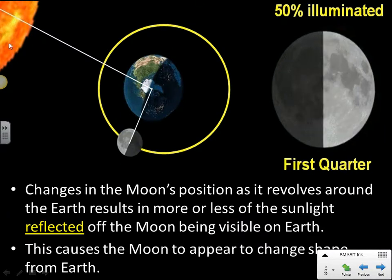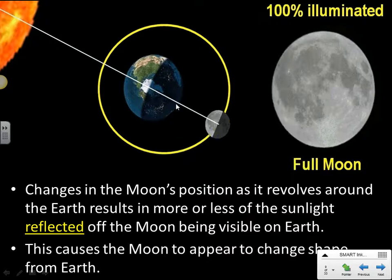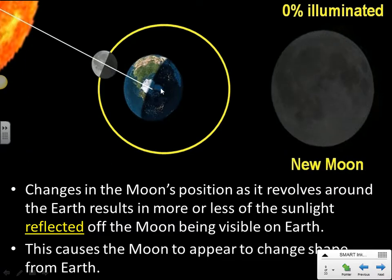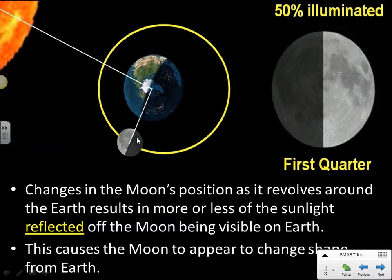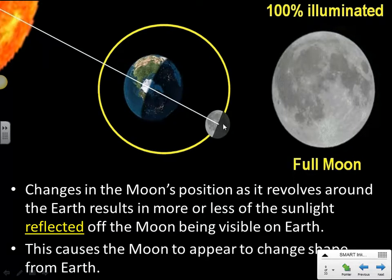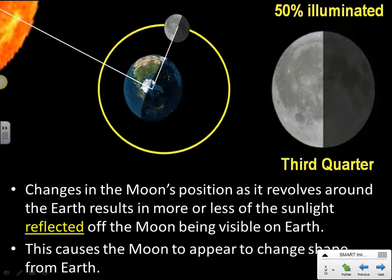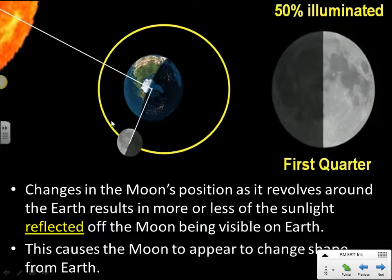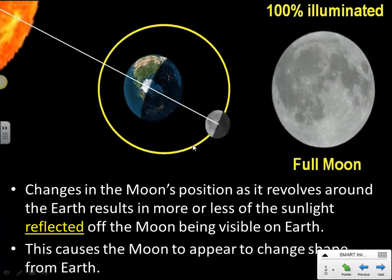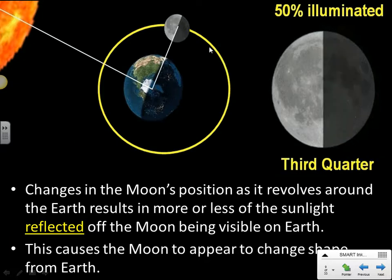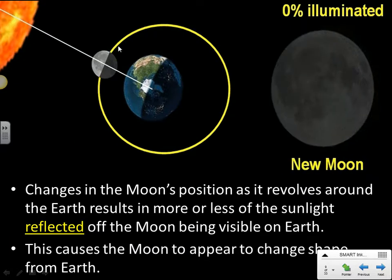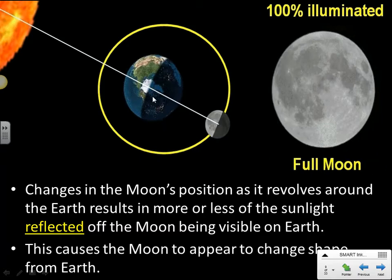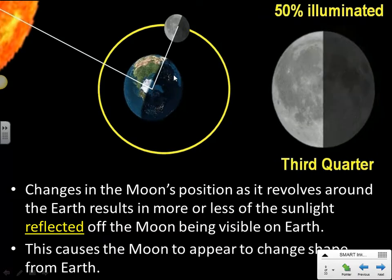The light that bounces off the moon back to Earth causes it to appear to change shape each month. For example, in this position we see mostly dark; here we see half and half; here we see mostly illuminated; here we see fully illuminated. One important detail is that the moon is always half illuminated from space — the moon and Earth are always half illuminated unless there's an eclipse — but what Earth actually sees is a different amount of light reflected back to it.